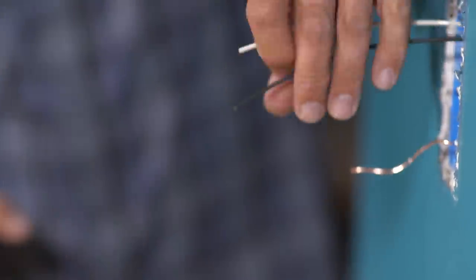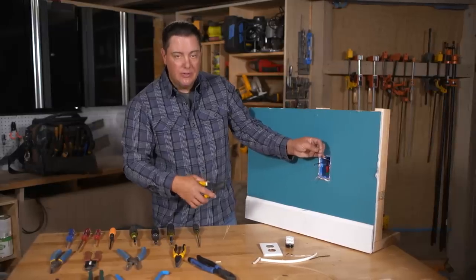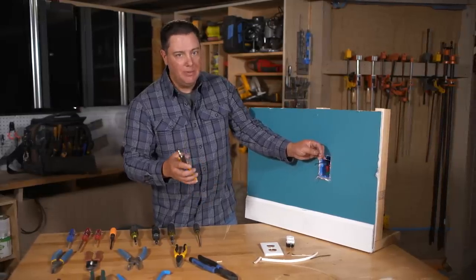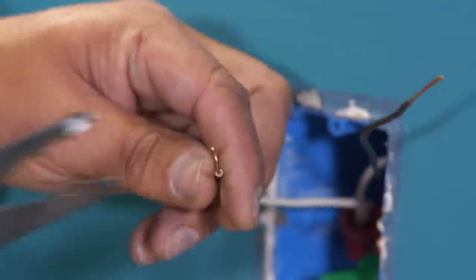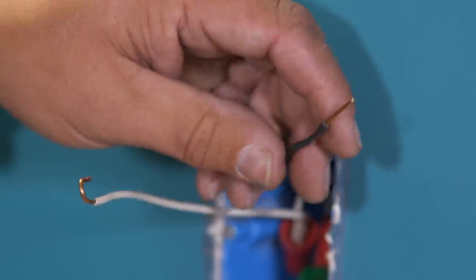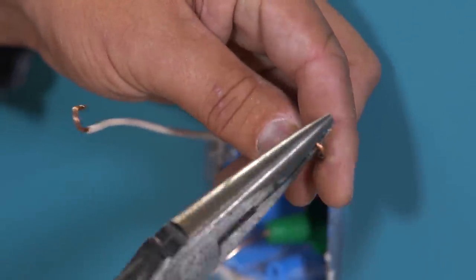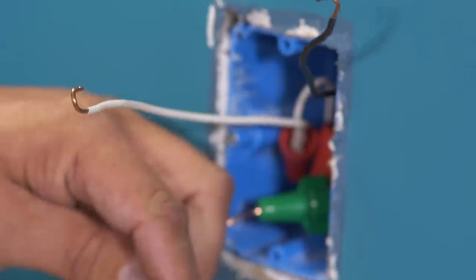So the next thing we want to do is put the loop on the end of this so we can put that around the screw and tighten that down. Again, a couple of ways to do it. You can still use these same strippers sometimes, and I prefer to, I have a heavy set of needle nose that just makes it a little easier and faster and more stable for me.